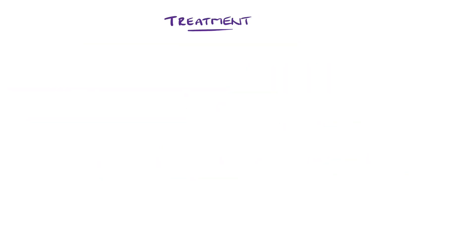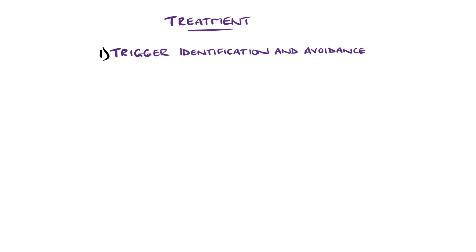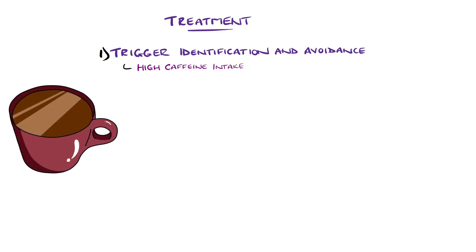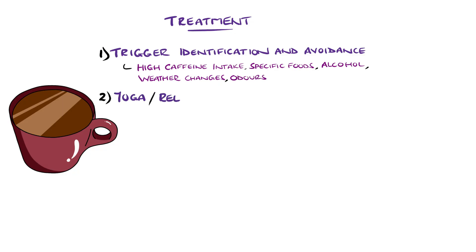Migraines are not curable, however steps can be taken to control them. First steps include identification and elimination of triggers where possible, though caution needs to be taken to reduce the risk of a restricted life due to trigger avoidance. Examples include high caffeine intake, specific foods like chocolate, alcohol, weather changes, and even specific odours. Yoga has been found to improve headache frequency and intensity, thought to occur due to reduced sympathetic drive.